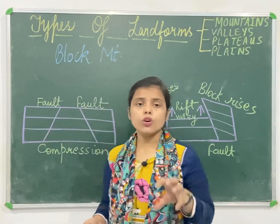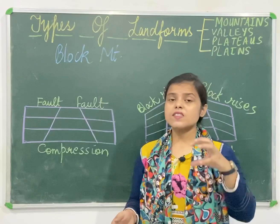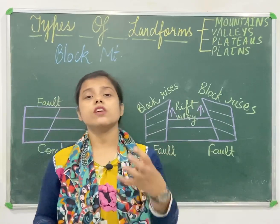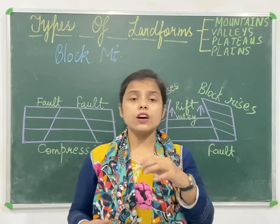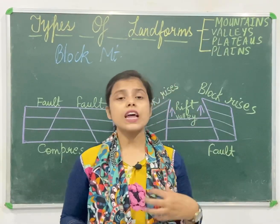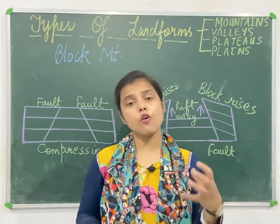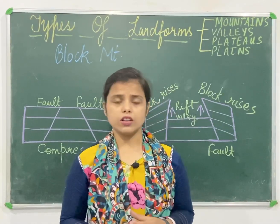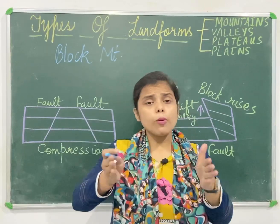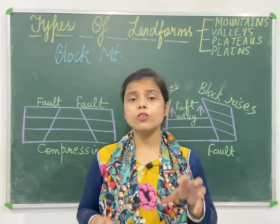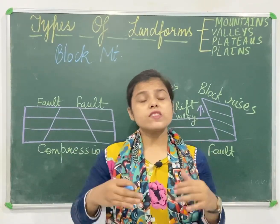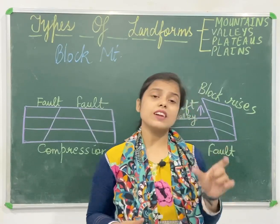We all know that when the earth's crust faults — that means cracks — block mountain is the result of faulting. What is faulting? When there is movement inside the earth's crust, there are tensional forces and compression forces. A fault occurs — a crack occurs on the earth's crust. When there is a crack on the earth's crust, blocks are formed. Crustal blocks are formed; the earth's crust cracks, and because of the crack, crustal blocks are formed.